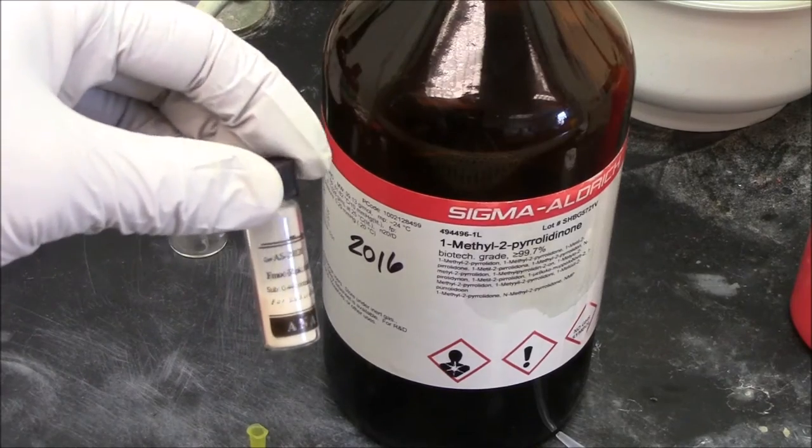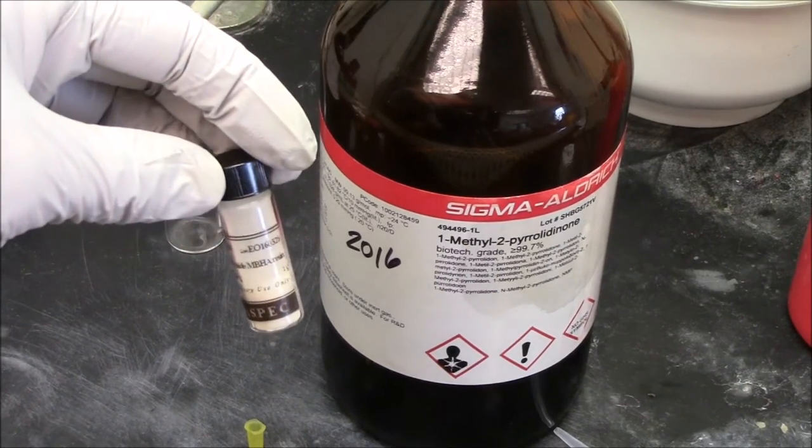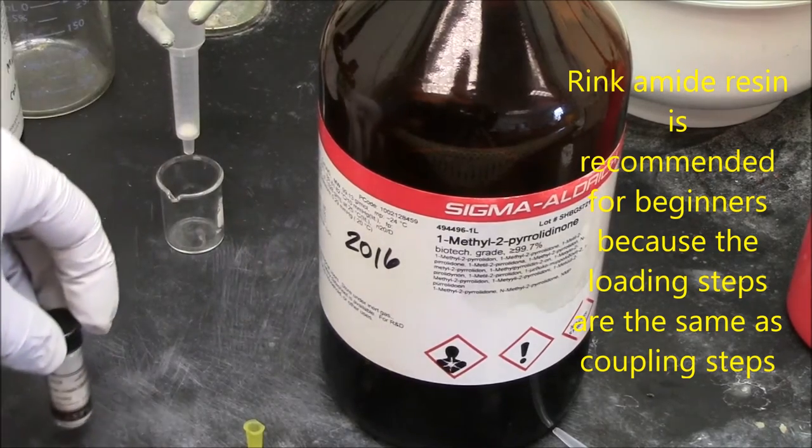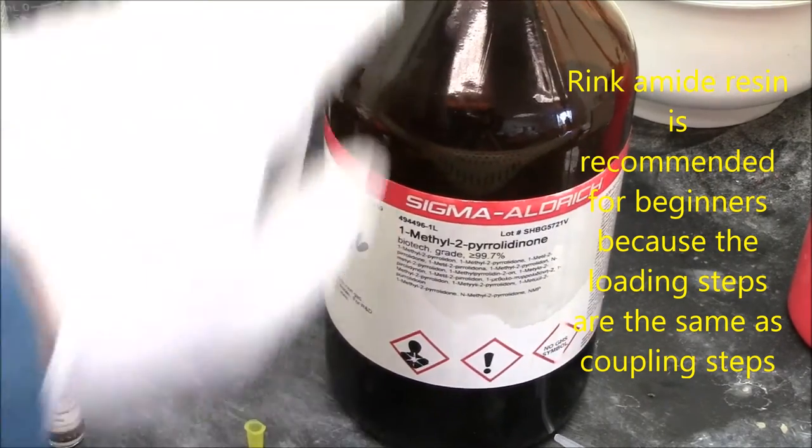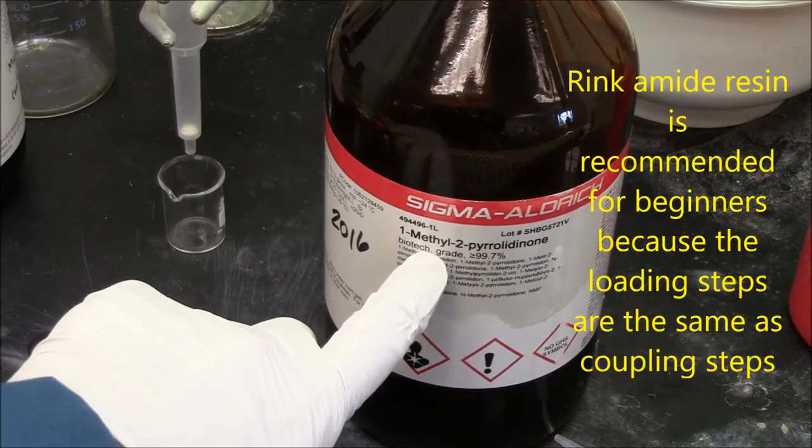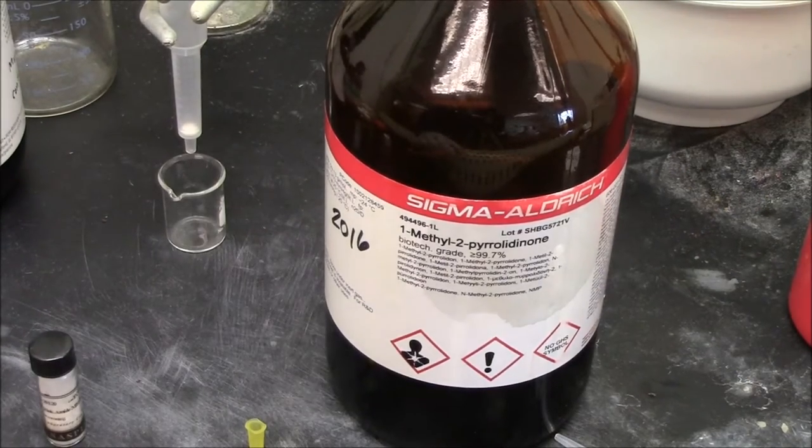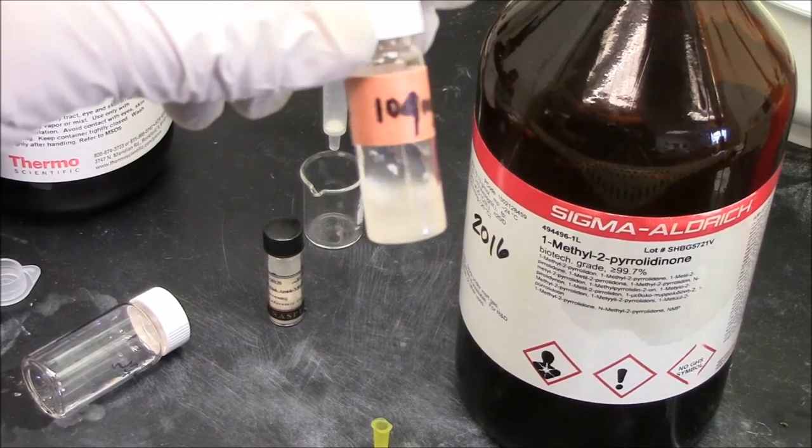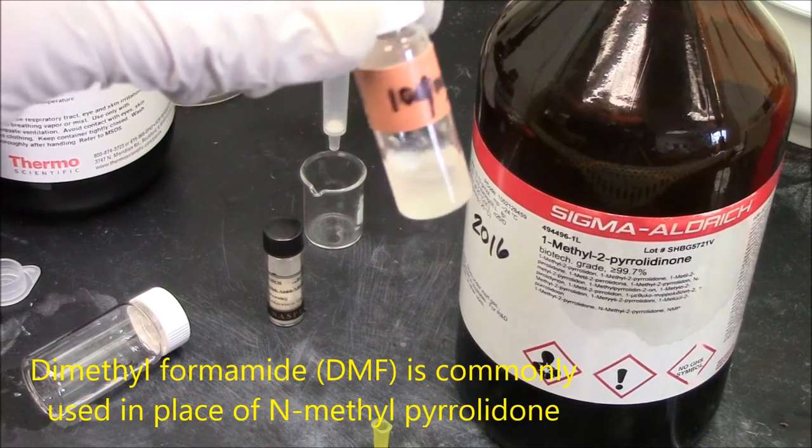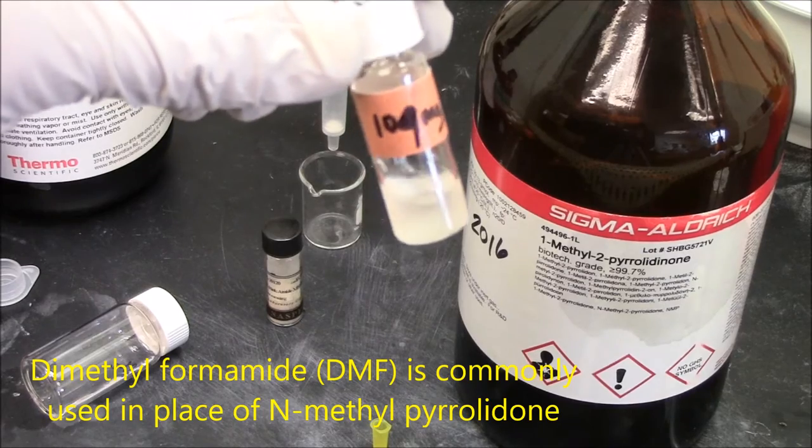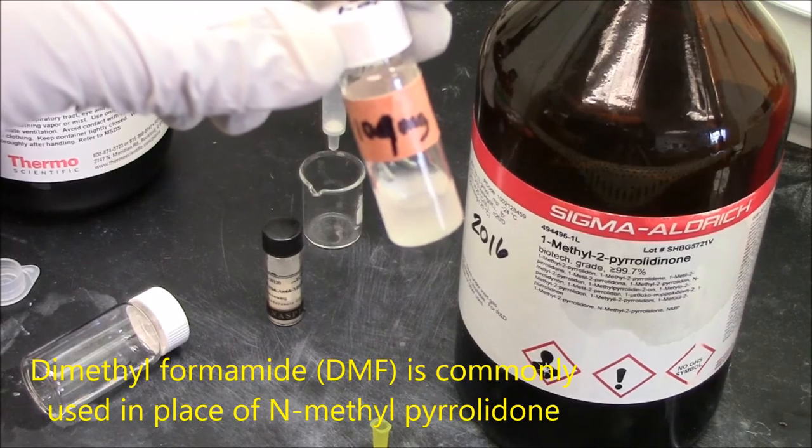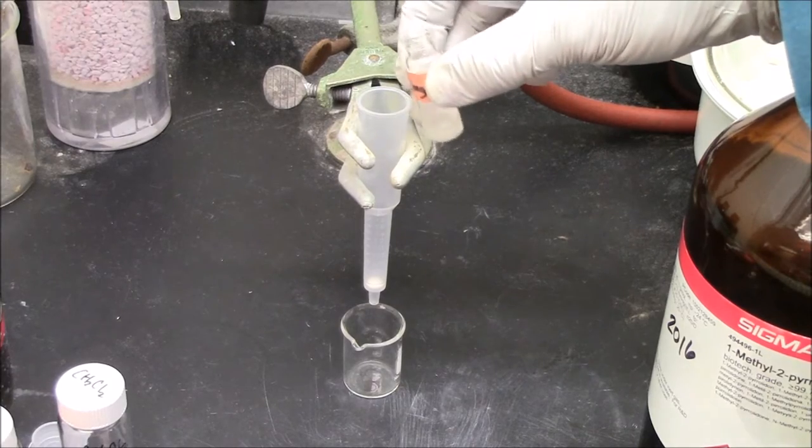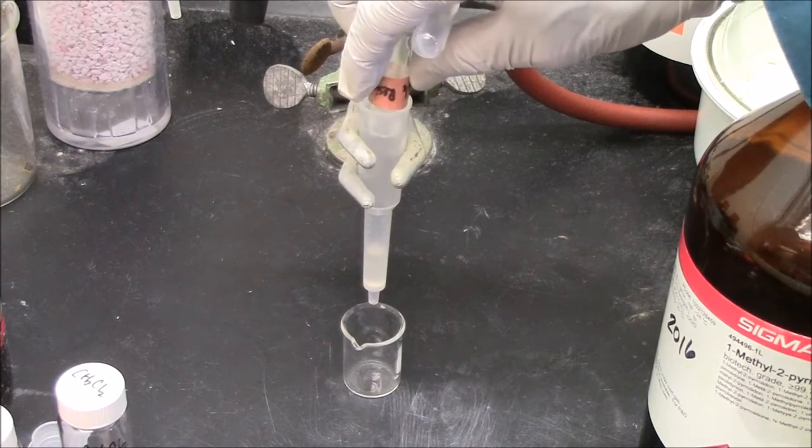I'm starting my synthesis with rink-amide resin here, weighed out 100 milligrams. It's a very fine sand-like texture, and the solvent I'm swelling the beads in is N-methylpyrrolidone. These beads have been swelling in the refrigerator overnight. The beads are slurry, almost like silica gel in organic solvent, so I'll dump them in.